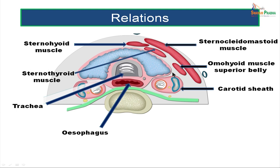The posterolateral surface of the lateral lobe is related to the carotid sheath and its contents: the common carotid artery, the internal jugular vein, and the vagus nerve (lying posteriorly between the artery and vein). The anterior wall of the carotid sheath is also related to the ansa cervicalis.